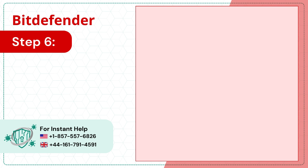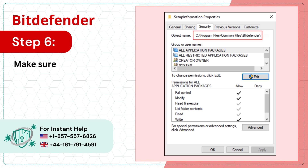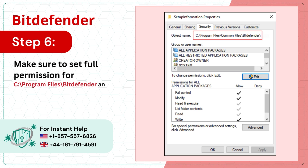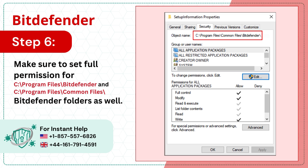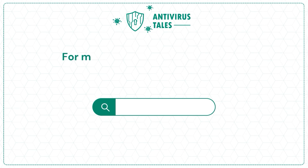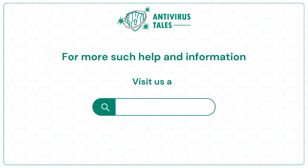Step 6: Make sure to set full permission for C:\Program Files\Bitdefender and C:\Program Files\Common Files\Bitdefender folders as well. For more help and information, visit us at www.antivirustales.com.